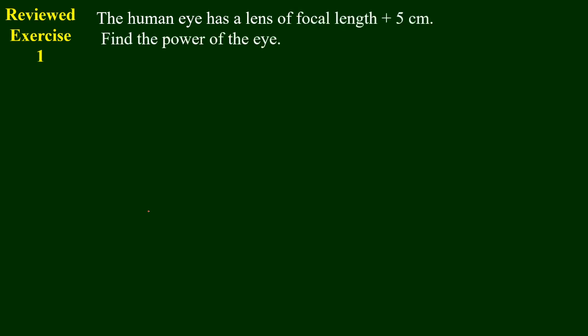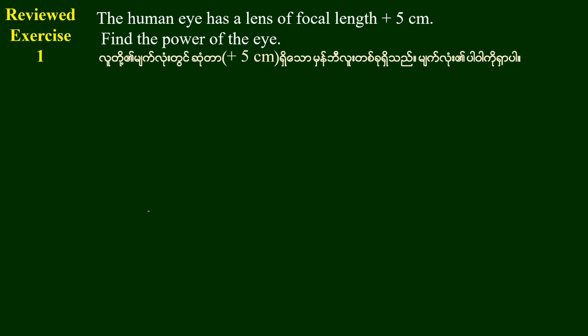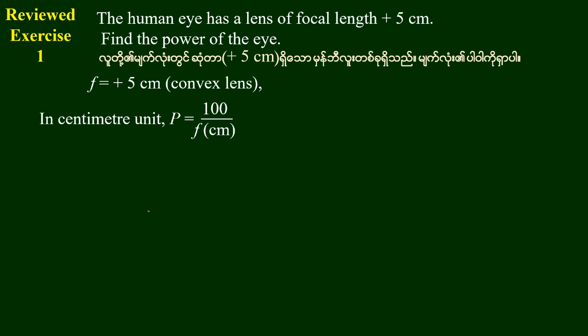The human eye has a lens of focal length plus 5 cm. Find the power of the eye. The value of f is equal to plus 5 cm, so power P is equal to 100 divided by f, which gives plus 20 diopters for a convex lens.